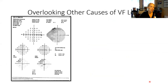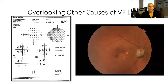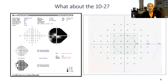Overlooking other causes of visual field loss goes back to trying to correlate it with the structural changes you see. This is a patient sent to me because his screening visual field was abnormal — it looks like a superior arcuate bundle defect, which could absolutely be glaucomatous. But when we look at his fundus, we see retinal scarring from an injury as a child. This is not a glaucomatous optic nerve. The visual field loss is due to this retinal damage, so we don't want to ascribe it to glaucoma.